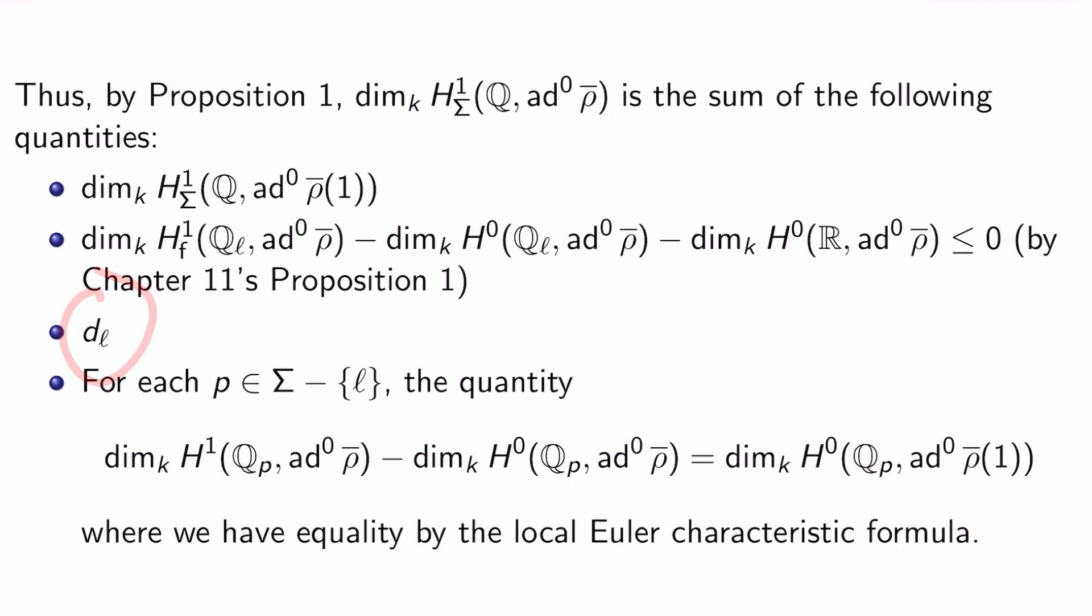d_l from the statement of Proposition 2. And for each prime p in Σ minus {l}, the quantity dim_k H^1(Q_p, ad^0 ρ̄) minus dim_k H^0(Q_p, ad^0 ρ̄), which, by the way, is equal to dim_k H^0(Q_p, ad^0 ρ̄(1)) by the local Euler characteristic formula from Chapter 4.